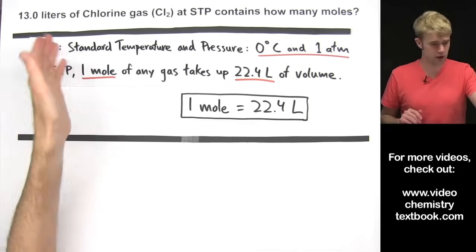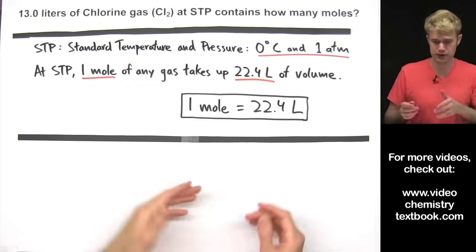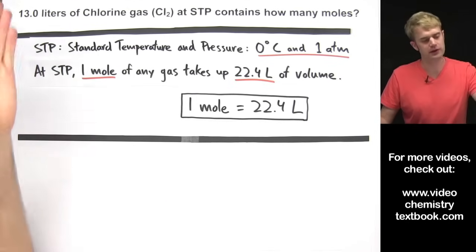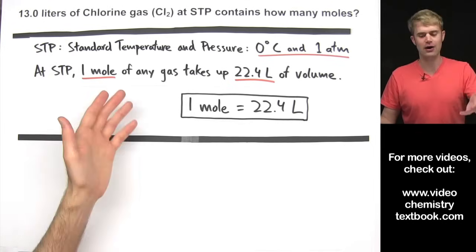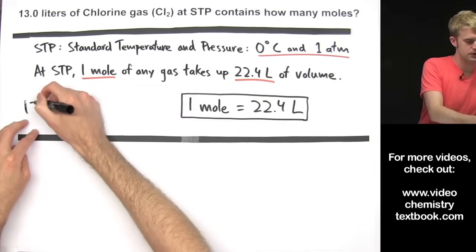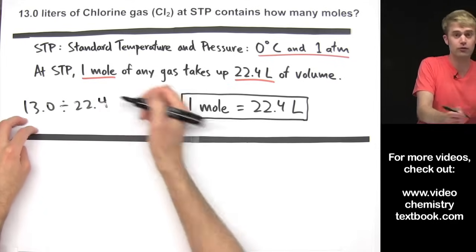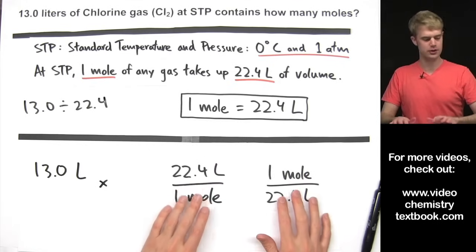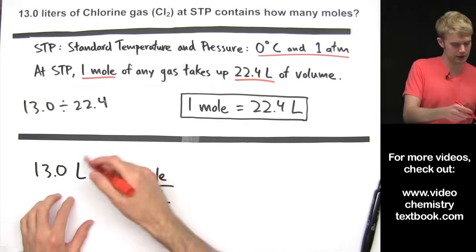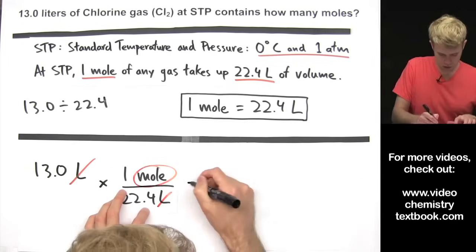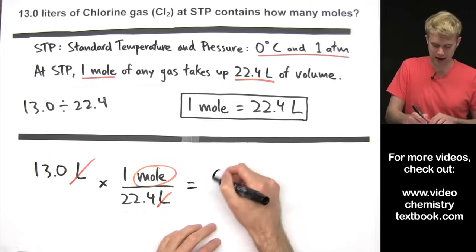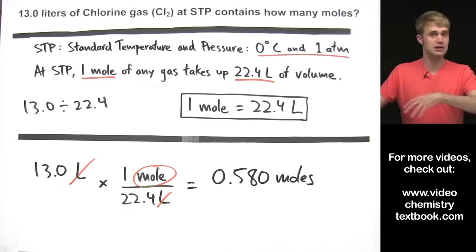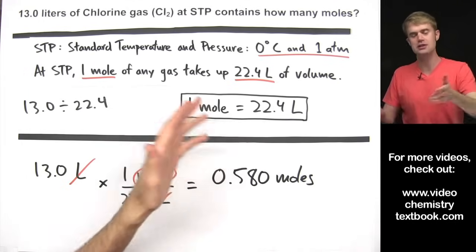One more: 13.0 liters of chlorine gas at STP contains how many moles? We're at STP, so we can use this relationship. If we had 22.4 liters of chlorine gas we'd have one mole; we have less than 22.4 liters so we'll have less than one mole. Using a conversion factor with liters on the bottom, liters cancels out, leaving moles. The math is 13.0 divided by 22.4, giving a final answer of 0.580 moles.